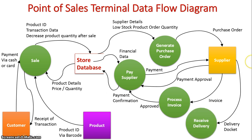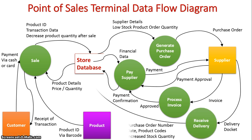A delivery docket is issued, and then the supplier sends the delivery, which goes into the database as an increase in product quantity because the products have been sent to the store. These last few steps can be done in different orders — sometimes the supplier will send the products and get paid later. This is just an overview of how a point-of-sales terminal automates tasks and conducts its activities.